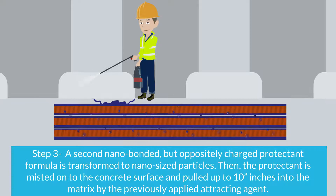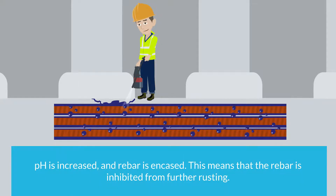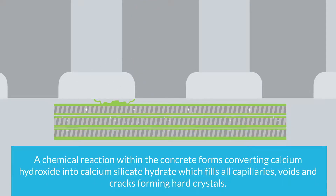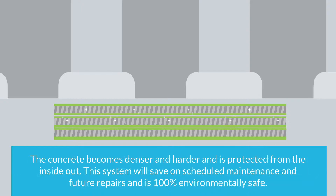The protectant is misted onto the concrete surface and pulled up to 10 inches into the matrix by the previously applied attracting agent. pH is increased and rebar is encased, inhibiting further rusting. A chemical reaction within the concrete forms, converting calcium hydroxide into calcium silicate hydrate, which fills all capillaries, voids, and cracks, forming hard crystals deeper within the matrix. Silica gels are formed, adding to the flexural strength of the concrete.